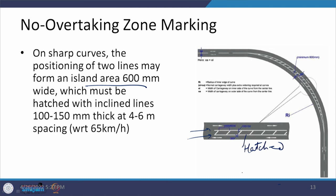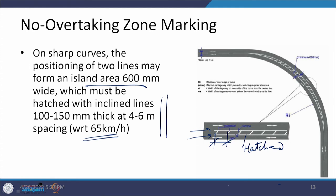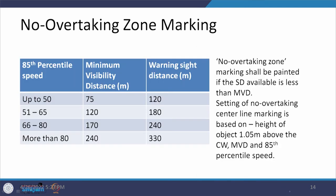For the hatching specification, the inclined lines are 100 to 150 mm thick placed at a certain spacing of 4 to 6 meters at around 65 km/h speed. As speed increases, the spacing increases; as speed decreases, the spacing decreases. That is how the hatching area is provided.